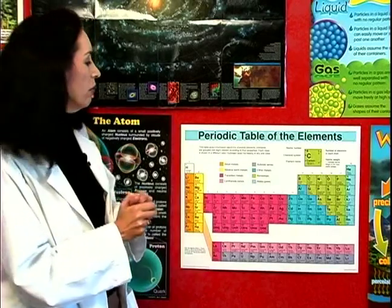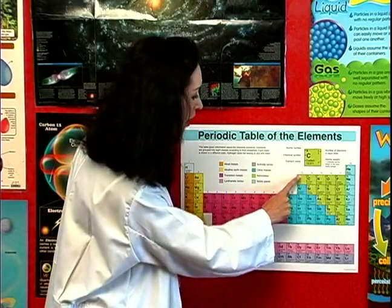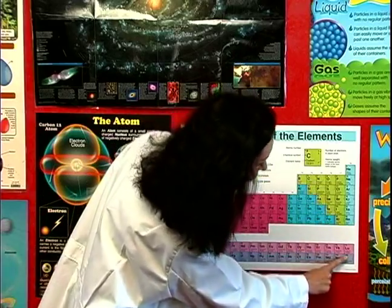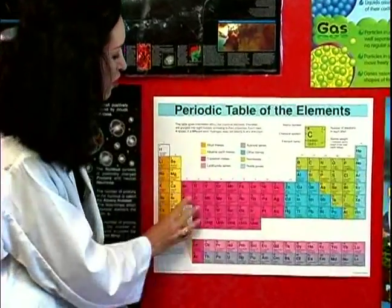The periodic table then, as you can see, from 1, 2, 3, 4, 5, all the way down here, is arranged by atomic number and then by similar properties.